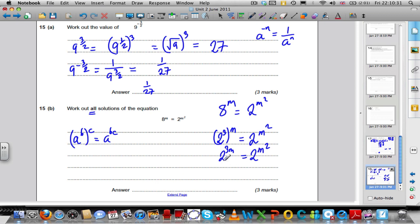Now, once you're in this position, the base numbers are the same. The only way for these two equations to be equal is if the powers are also the same, now that we've got the bases the same. So, 3m must equal m squared. Subtract 3m off both sides. 0 equals m squared minus 3m.